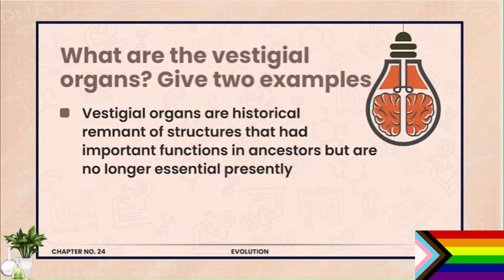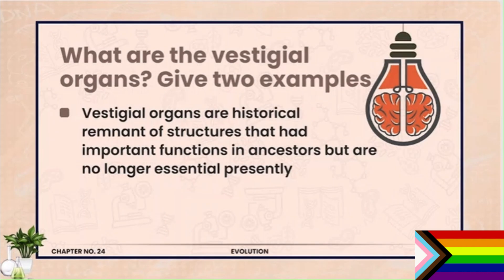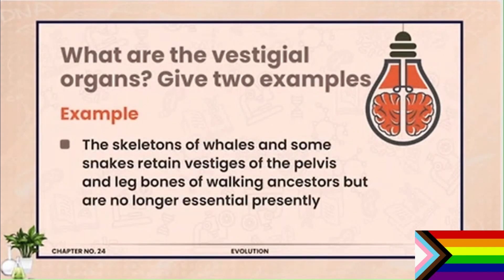Question number 6: What are vestigial organs? Give two examples. These are organs that are remnants of structures from ancestors, such as the pelvic and leg bones of whales, the appendix in humans, and similar structures in carnivores.